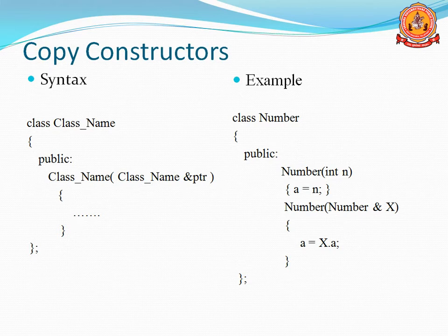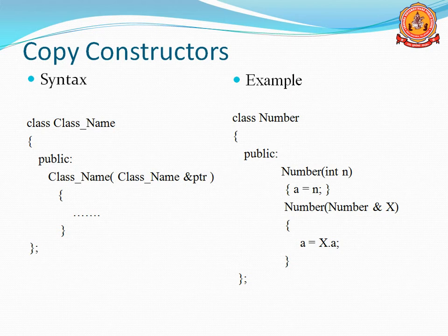Here is the syntax for the Copy Constructor. The class name is written in the public section with no return type. Inside the parenthesis, we write the class name followed by the ampersand symbol and a pointer variable — that is, we are creating a same-class object as a reference argument inside the constructor.